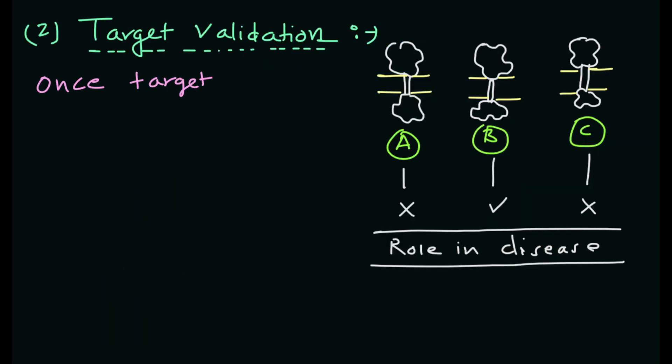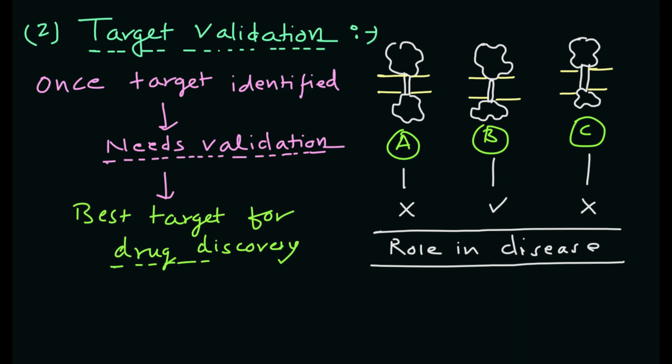Then comes target validation. Once the target has been identified, it needs to be validated to ensure that it is a suitable target for drug development. This involves testing the target's role in disease progression and determining whether inhibiting or activating the target will be effective in treating the disease.